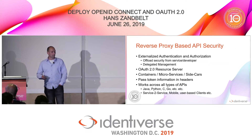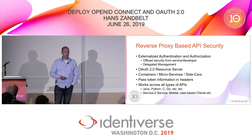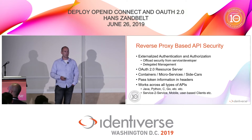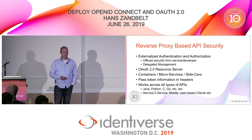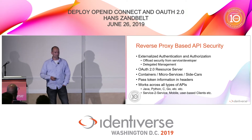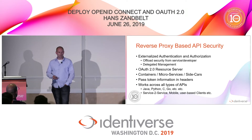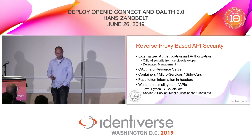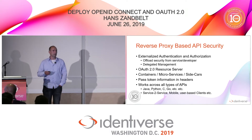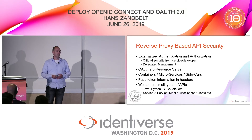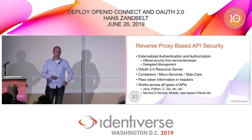This results in externalized authentication and authorization again — offloading security implementation from the web service developer, allowing for delegated management. If you configure your reverse proxy through a containerized mechanism, you can effectively create either a delegated or centralized access management implementation, this time comprising an OAuth 2.0 resource server function. And again, it works across all types of APIs — whether your service is written in Java, Python, C, or Go. You don't need to find an OAuth 2.0 resource server implementation for your language. You just put it in the reverse proxy and be done.